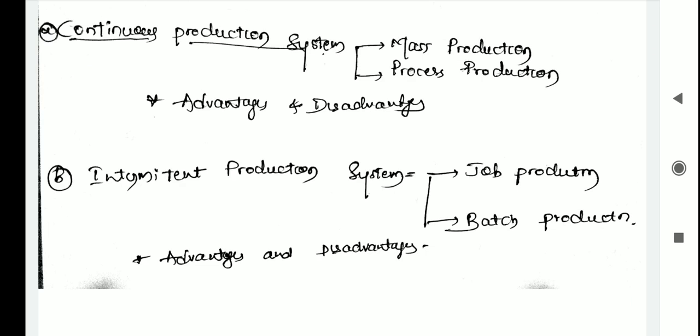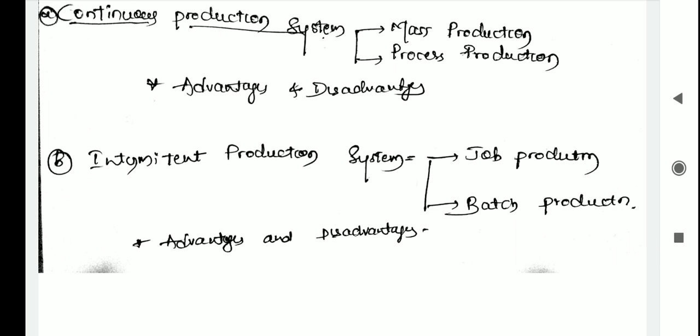In this type, the raw material is produced through a standard set of processes and sequences to produce a continuous stream of products. In a continuous production system, all the facilities are standardized as the inputs are put through a series of successive connected operations. In other words, the same set of inputs flow through the same routes and same processes to convert them into finished goods. Such type of production system is adopted by industries which produce products like petroleum, chemicals, steel, sugar, etc.